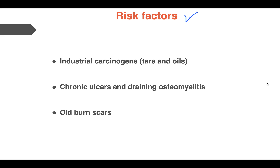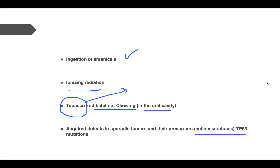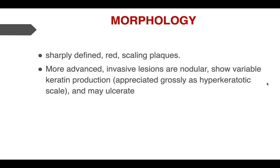Risk factors for development of SCC include industrial carcinogens such as tars and oils, chronic ulcers like chronic diabetic ulcers, old burn scars, ingestion of arsenicals, ionizing radiation, and tobacco. In any case of chronic irritation, SCC can develop. Tobacco and betel nut chewing lead to chronic irritation in the oral cavity, which is again a method of development of SCC. TP53 mutations are also always a factor.